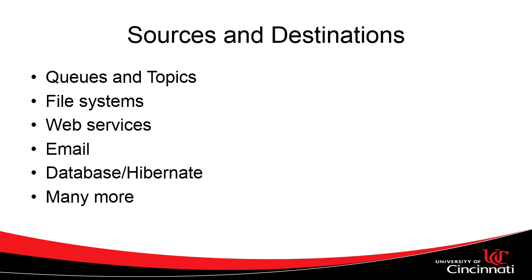We're going to start our next video with a simple example of setting up Apache Camel — a very simple example of reading from one queue and writing to another queue. After that, we'll expand that example to read from the queue and write to an email. What that's going to be is: when somebody adds a plant to our database, the add-a-plant module will write this to a queue, Camel will pick it up, and then Camel will generate an email based on that action. Lots of fun — I look forward to seeing you then. Thank you.